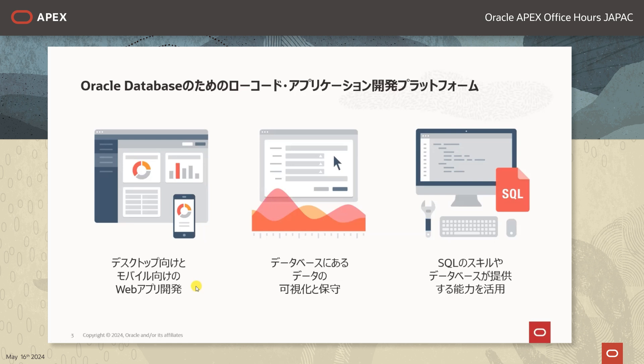Oracleの APEXの特徴は3つございます。1つ目はデスクトップ向け・モバイル向け両方のウェブアプリを開発できるという点です。APEXで開発したアプリケーションはレスポンシブウェブデザインですので、利用者の画面サイズに応じて表示が変わります。そのためデスクトップに加えてモバイル向けのウェブアプリケーションも一緒に開発することができます。2つ目の特徴としまして、データベースにあるデータの可視化と編集ができるという点で、レポート・チャート・カレンダーなどを簡単に素早く作ることができます。